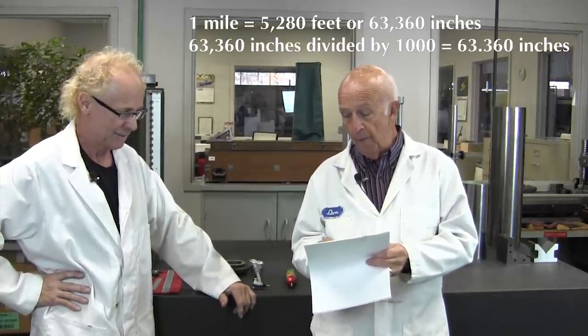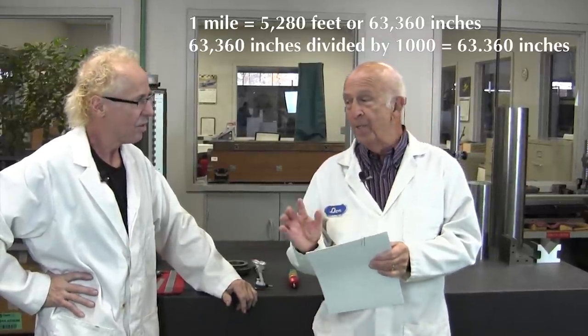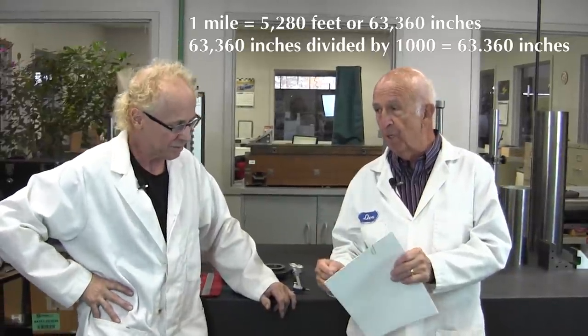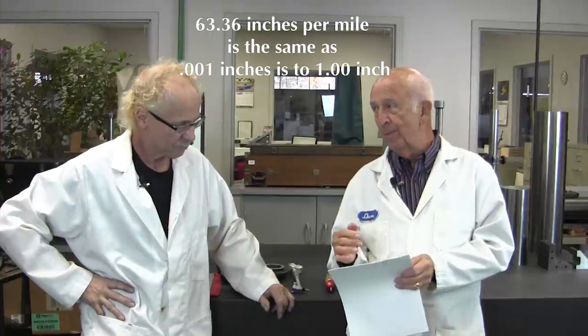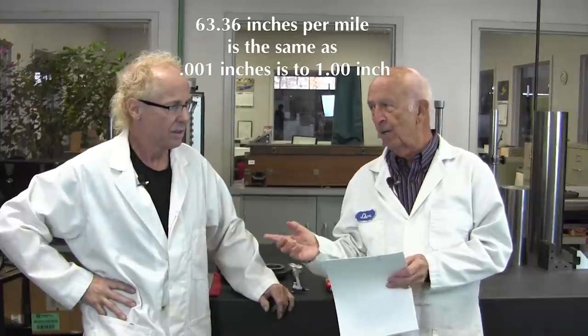If you divide that by a thousand, that would give you 63 inches. Why am I saying that? Because if you take an inch and you divide an inch into one thousand parts, you would have one thousandth per inch. Here we've got 63 inches per mile, which is the same as one thousandth is to an inch. You look a little puzzled. Well, I'm just wondering if I got to remember this on the test. There will be a written later.